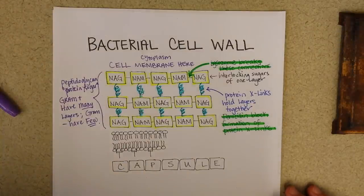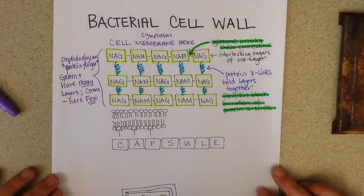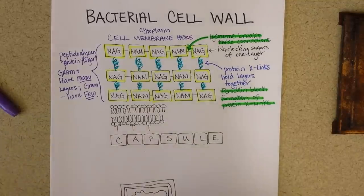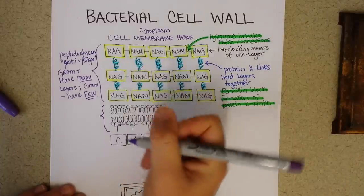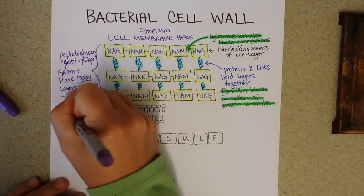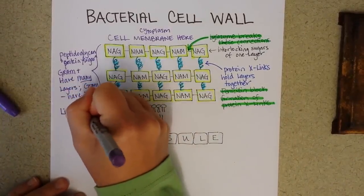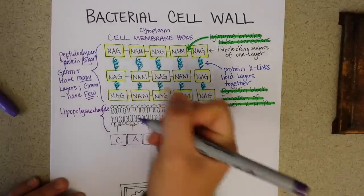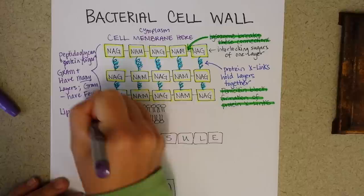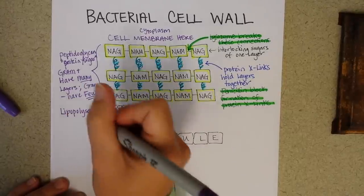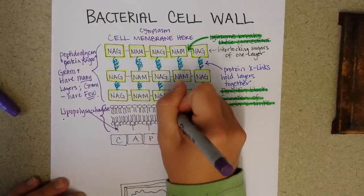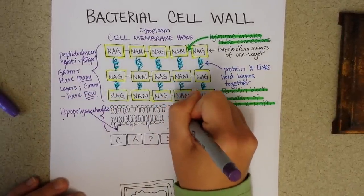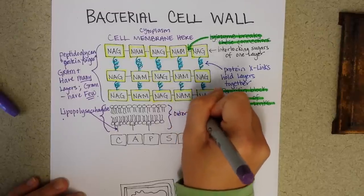Okay, so next we're going to look at the outer lipid membrane of only gram negative. So we'll use the purple again, so we're talking kind of about another layer here. This is called the lipopolysaccharide. Actually, we'll talk about that in a second. But this whole thing is the outer lipid membrane.